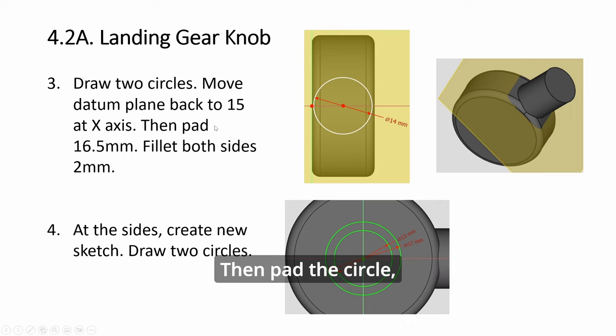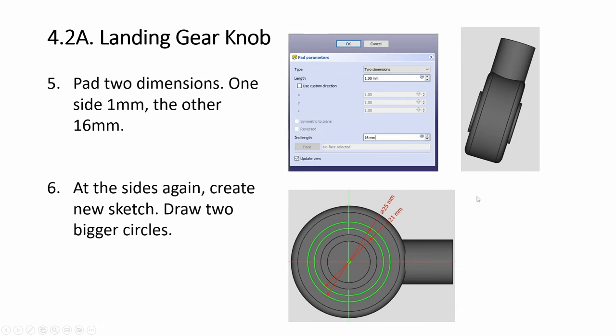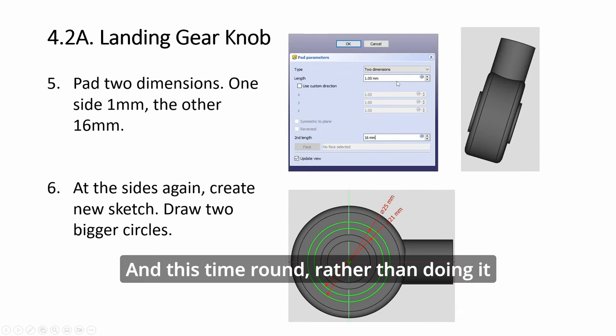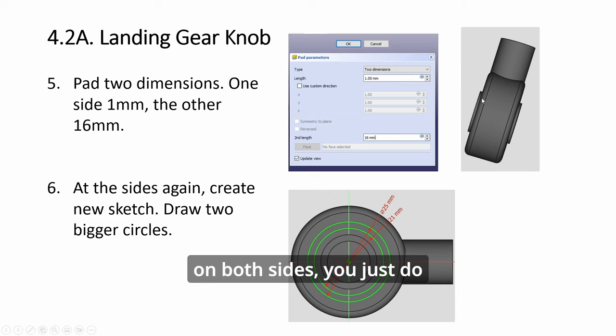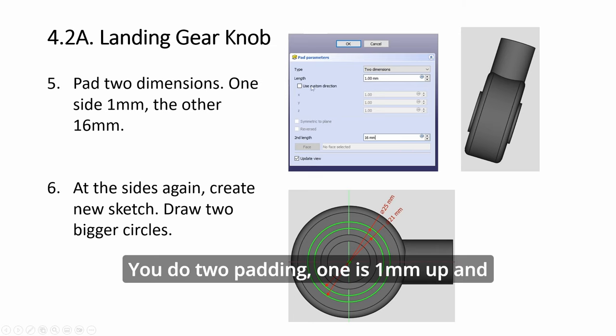Move it back down just inside a bit as shown, then pad the circle to get the shaft. At the side, create a pair of circles. Rather than doing it on both sides, do a special kind of padding - one is 1mm up, and the second one goes reverse down 16mm so it will protrude out.